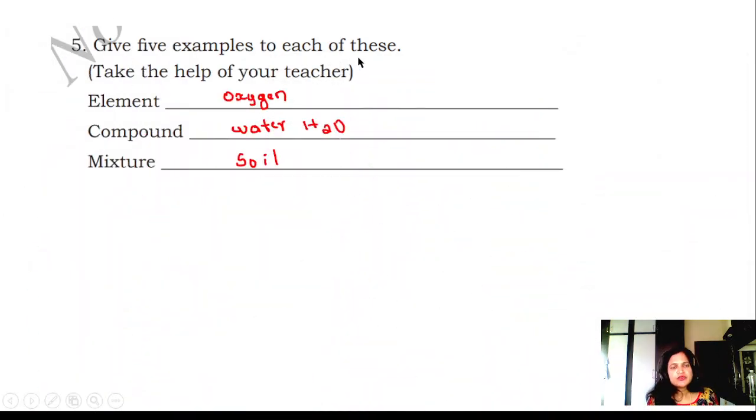Give two examples of each of these. Take the help of your teacher. Element, for example, is oxygen. Compound is water, that is H2O. Mixture is soil.